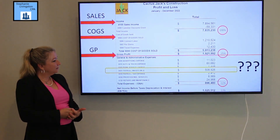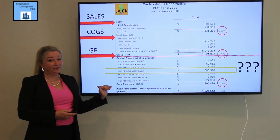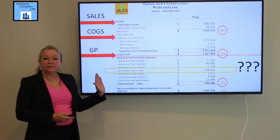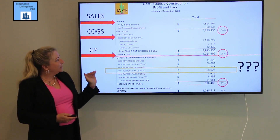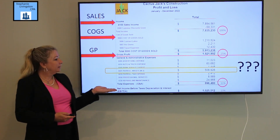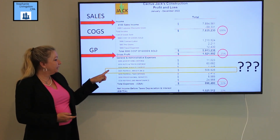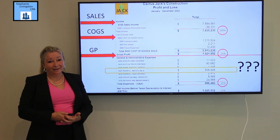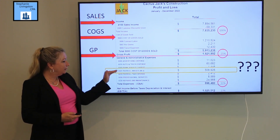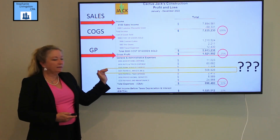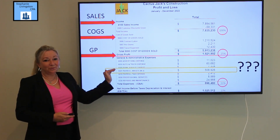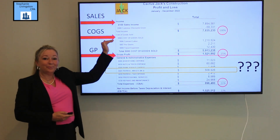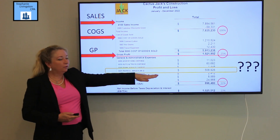There are other things to consider below the line, which we talked about before. Below the line is still very important because it is the cost of keeping your business running — not necessarily the cost of a job. When I was looking at Cactus Jack's profit and loss statement, I saw something that stood out: a lot of business owners make the mistake of thinking that because you have W-2 wages, they all have to go below the line.